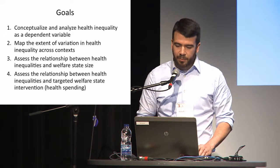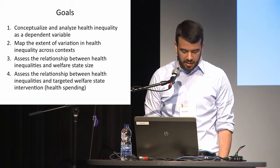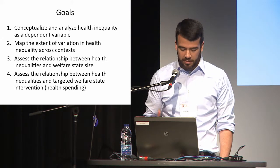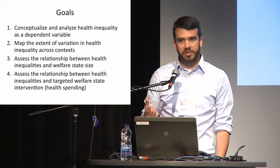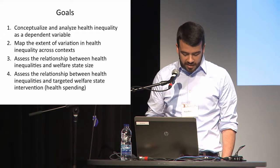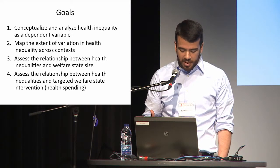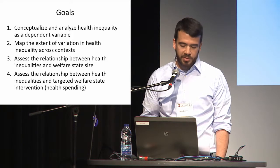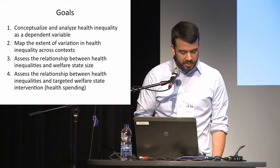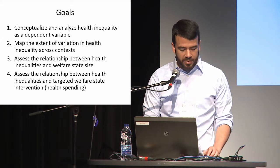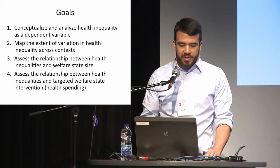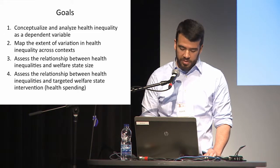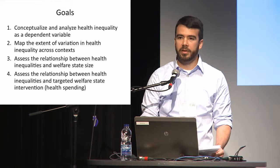We have four immediate goals for this presentation. First, we operationalize health inequalities or health gradients along several dimensions as comparable variables across contexts. Second, we map the variation across contexts, looking at gradients in terms of education, income, gender, and minority status. Third, after demonstrating cross-national variability, we begin to explore possible determinants — considering the general role of the welfare state as a force for alleviating or shaping broader levels of inequality, and then looking more specifically at the welfare state's role in targeting health disparities.